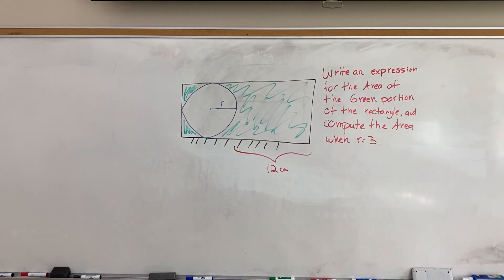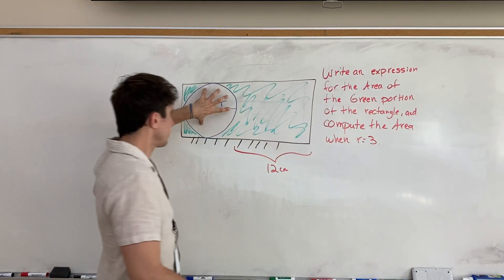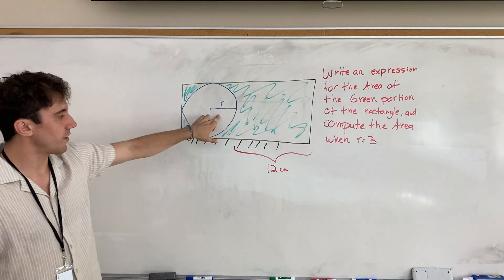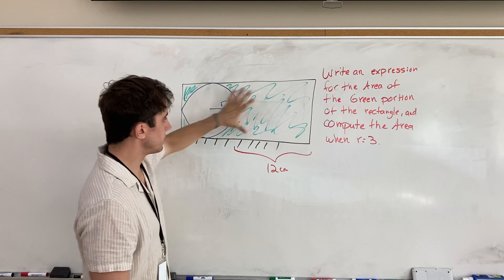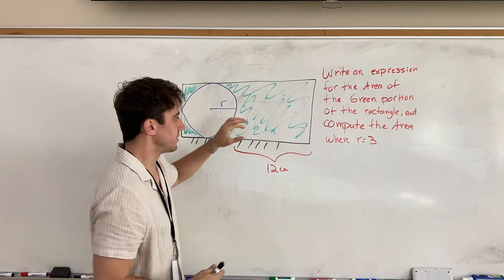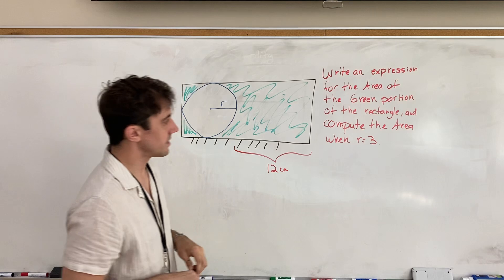Good afternoon, everyone. Today we have a rectangle with a circle embedded inside of it with a radius of r, and we're asked to write an expression for the area of just the green portion, this poorly colored green portion of the inside of the rectangle.